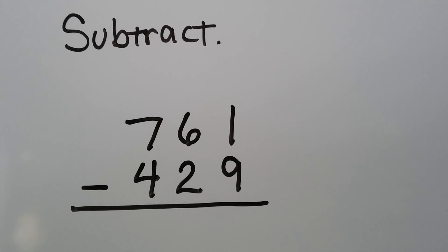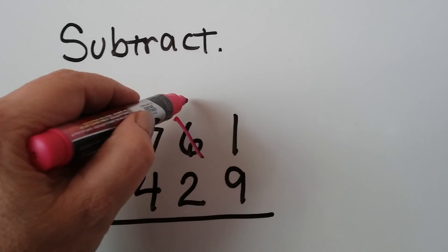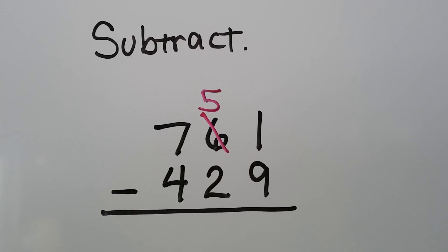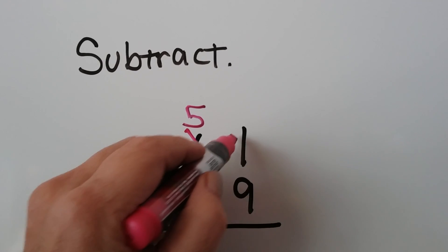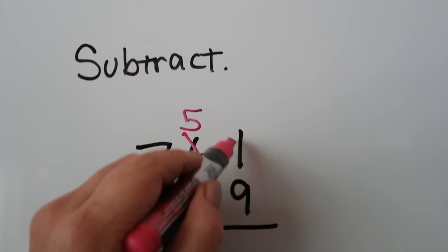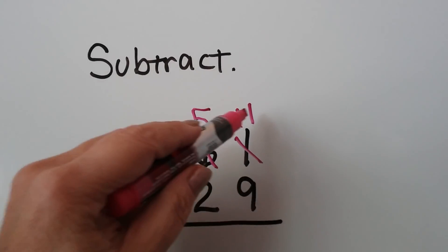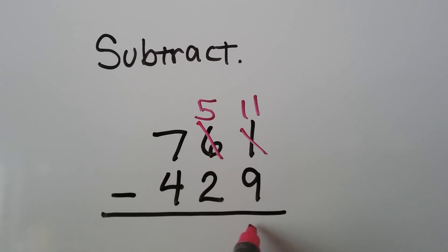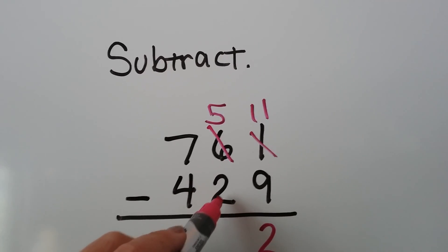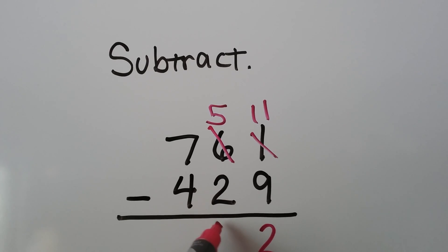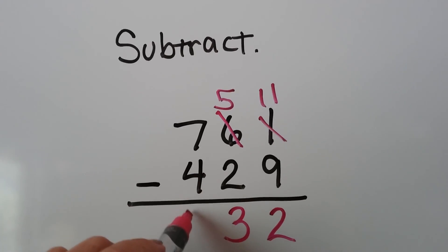We have one and we need to take away nine, and we can't because the nine's so big. So let's regroup from the tens place — we'll turn this into a five and give the ten to the ones place. So now instead of one, we have 11 because 10 plus one is 11. 11 minus nine is a two. Five minus two is a three. And seven minus four is a three.